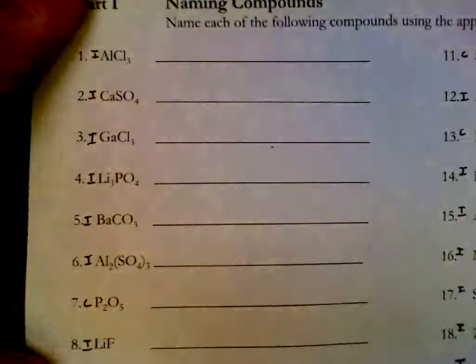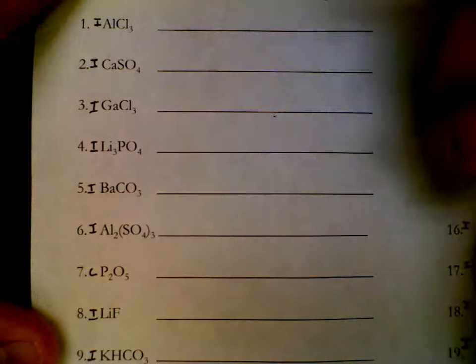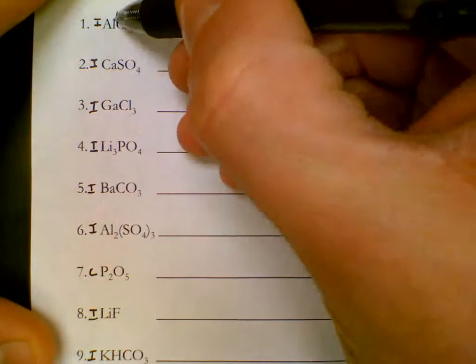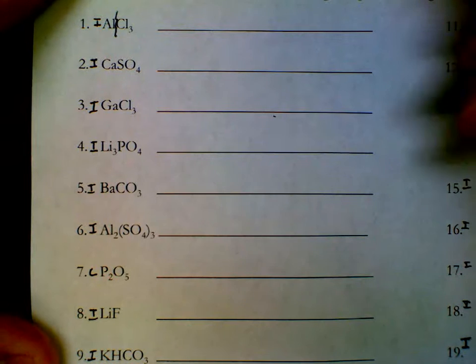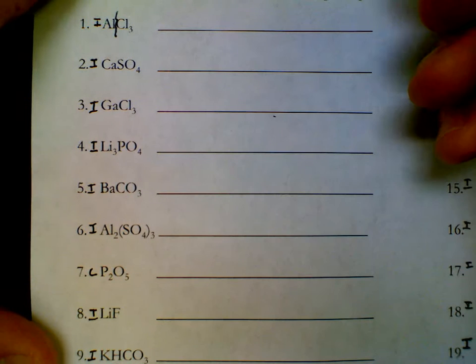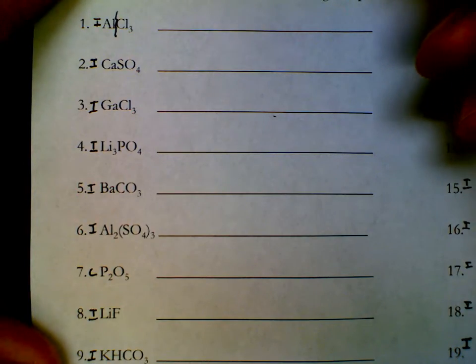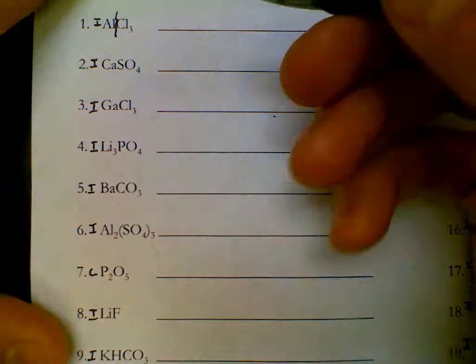We will name these in groups because that helps you keep the same set of rules multiple times in a row. Ionic compounds name cation, name the anion. First atom is going to be your cation, second atom is your anion. If you don't know the names of these, you need to look them up, use your resource.